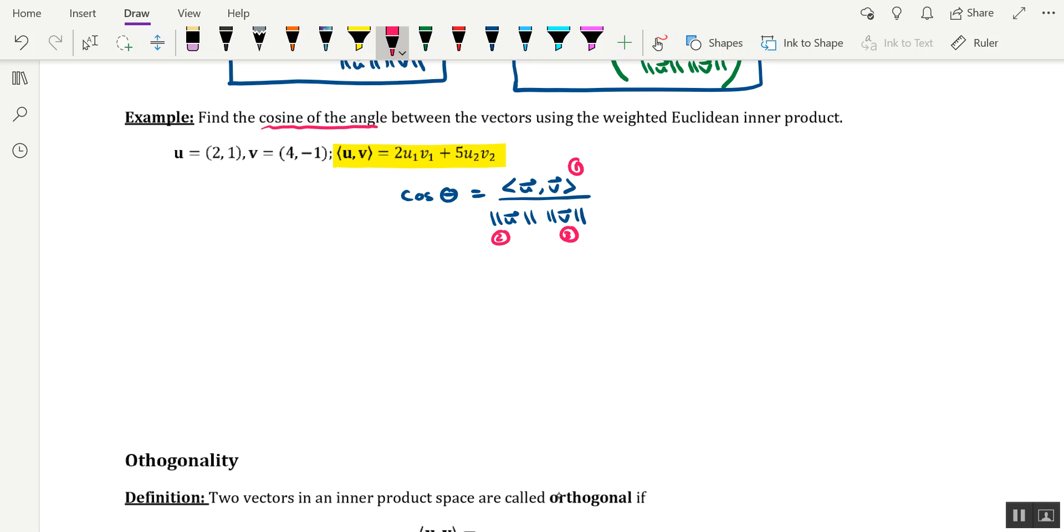Alright, so let's do this as some scratch work over to the side. The first thing is going to be the inner product of u with v. Do keep in mind that we're using the weighted Euclidean inner product. So this expression right here, which is more or less a formula, will allow us to find the inner product of these two vectors. So it's 2 times u1, so we'll do 2 times the first component of u, which is 2, times v1, so that's the first component of v, which is 4.